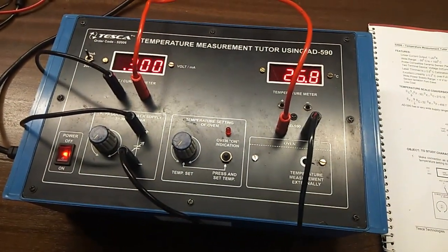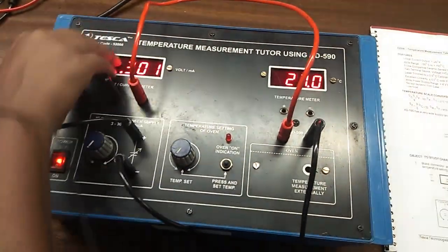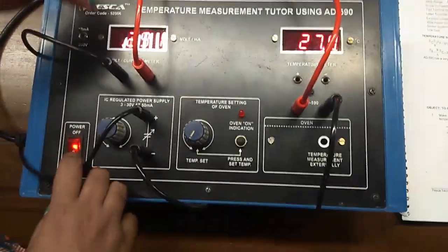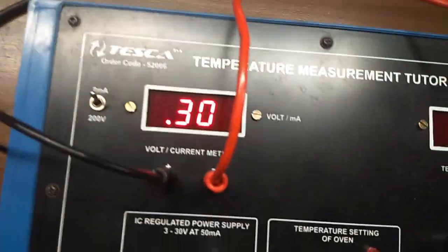Turn on the kit. This is the voltage and this is the current, around 0.30.